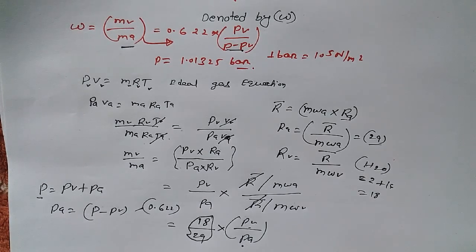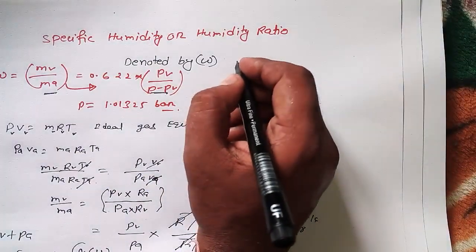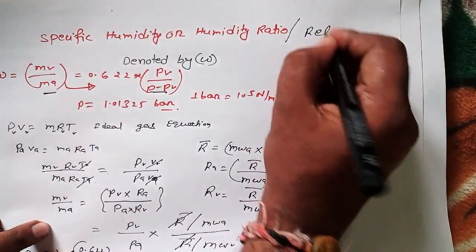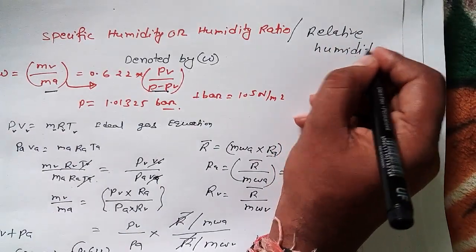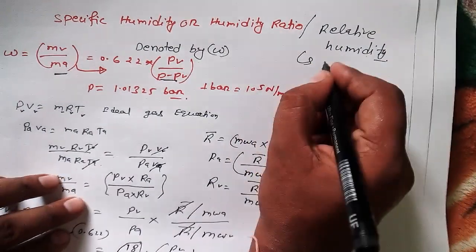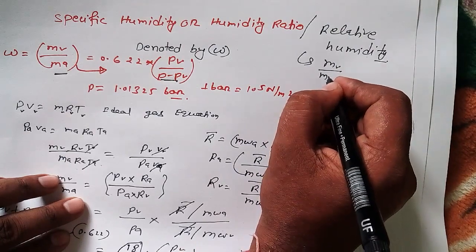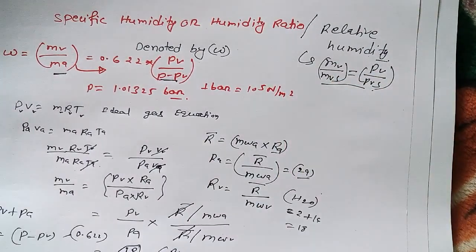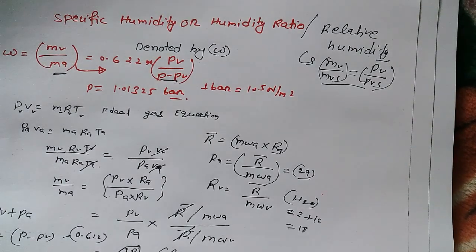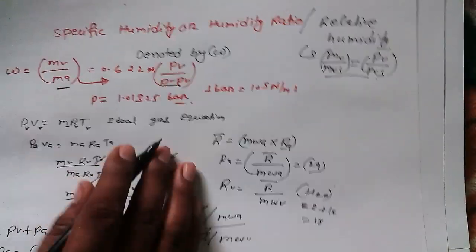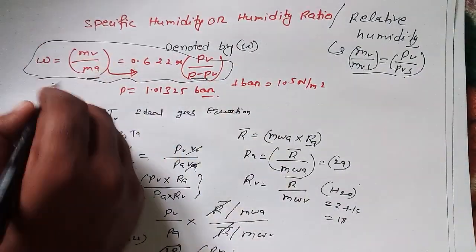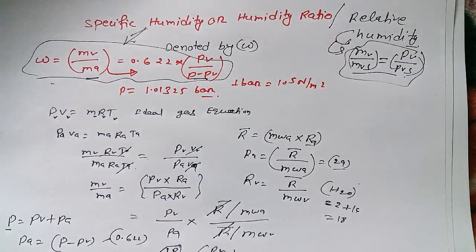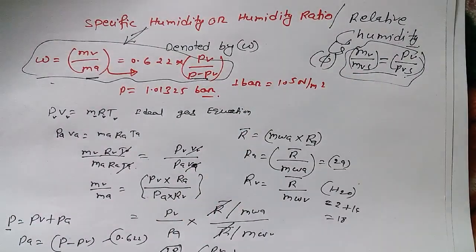Now let me share another important thing — relative humidity, denoted by phi. The formula is: mass of water vapor divided by mass of water vapor at saturated condition, which equals pressure of water vapor divided by pressure of water vapor at saturated condition. So remember: specific humidity uses omega, and relative humidity uses phi. I hope you understand these concepts. Hope to see you again in my next video. Bye.